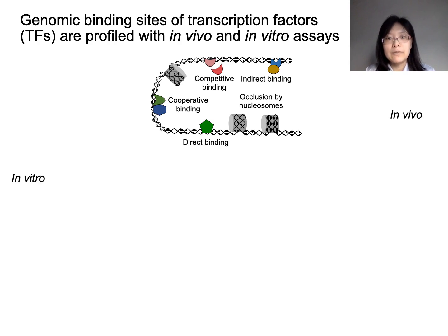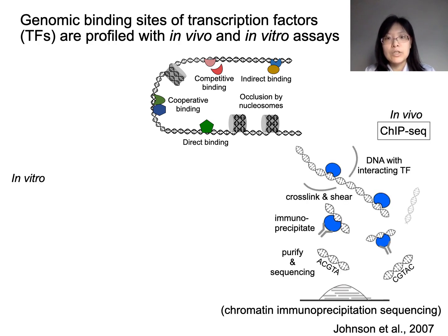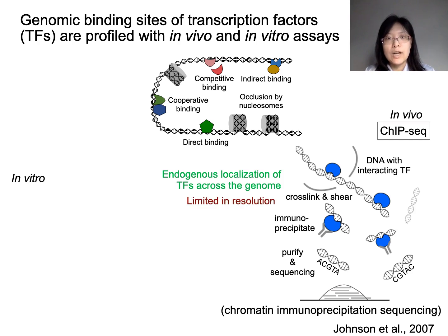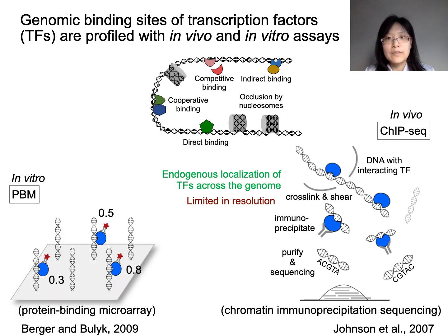One of the most commonly used in vivo techniques is the ChIP-seq assay. It captures the localization of a transcription factor across the genome in an endogenous cellular context. However, its resolution is limited to tens to hundreds of base pairs. Among in vitro assays, the protein binding microarray is one of the most widely used. It has the advantage of being highly quantitative and easy to interpret, but the assay is not performed endogenously.